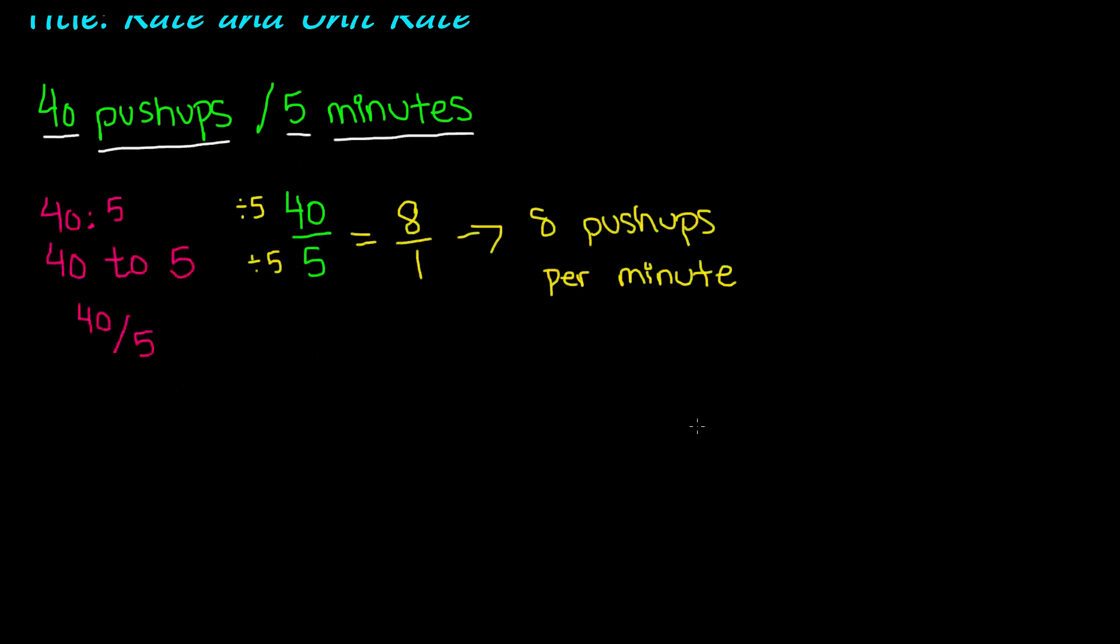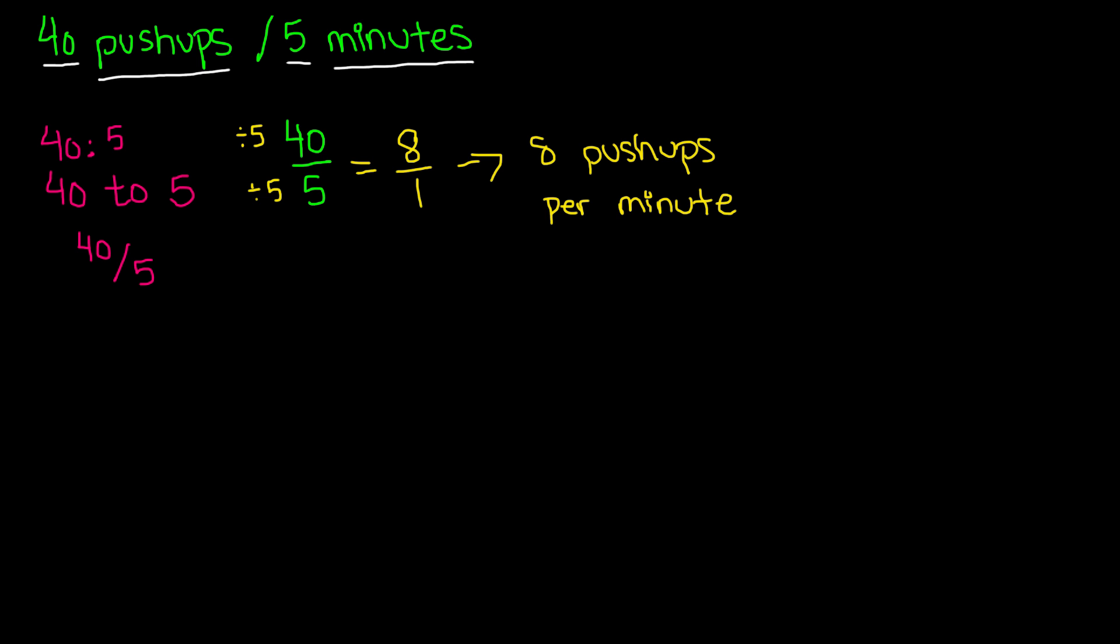Now this was the first method. The next one is by using cross products. So keep your fraction, 40 over 5, and we know that our unit rate must have a denominator of 1. Now since we don't know the numerator, we can use a variable to represent it, so let's say that our variable is n.